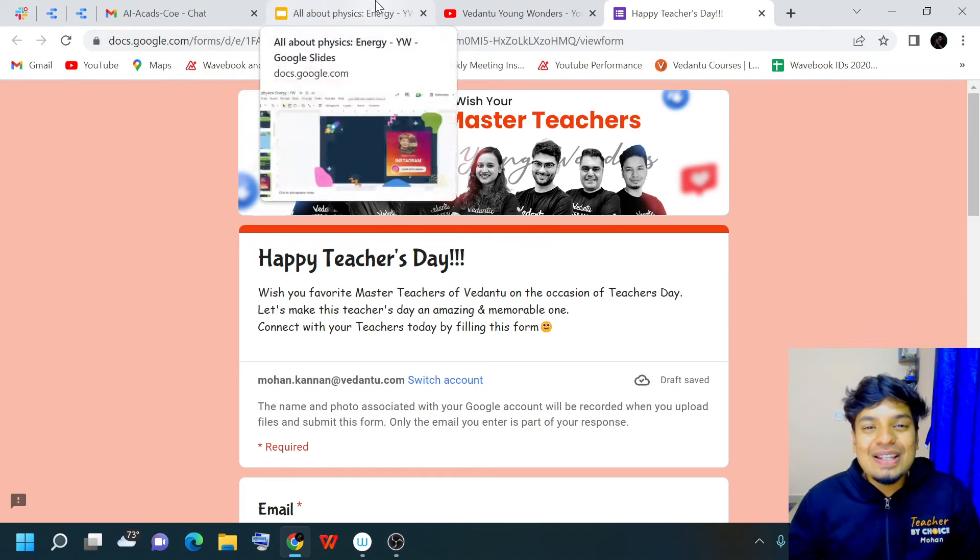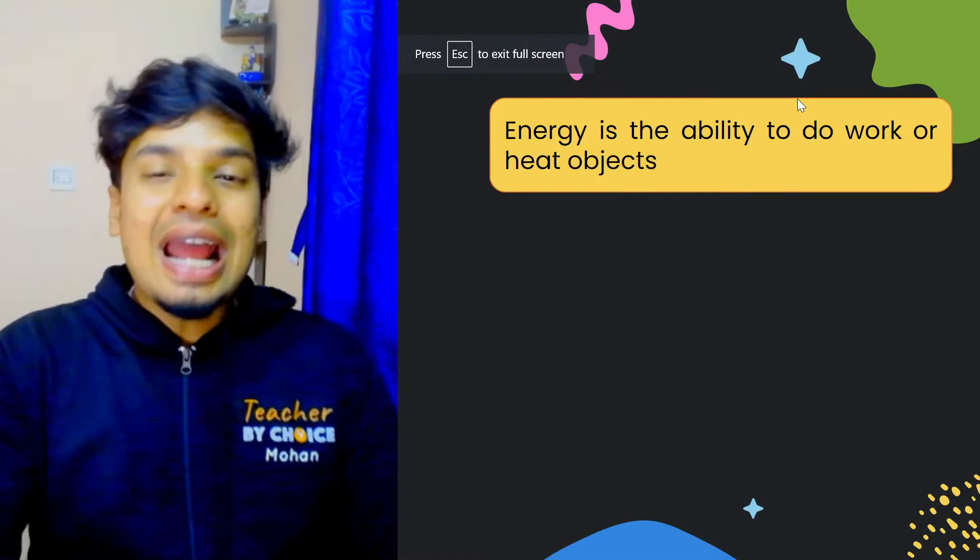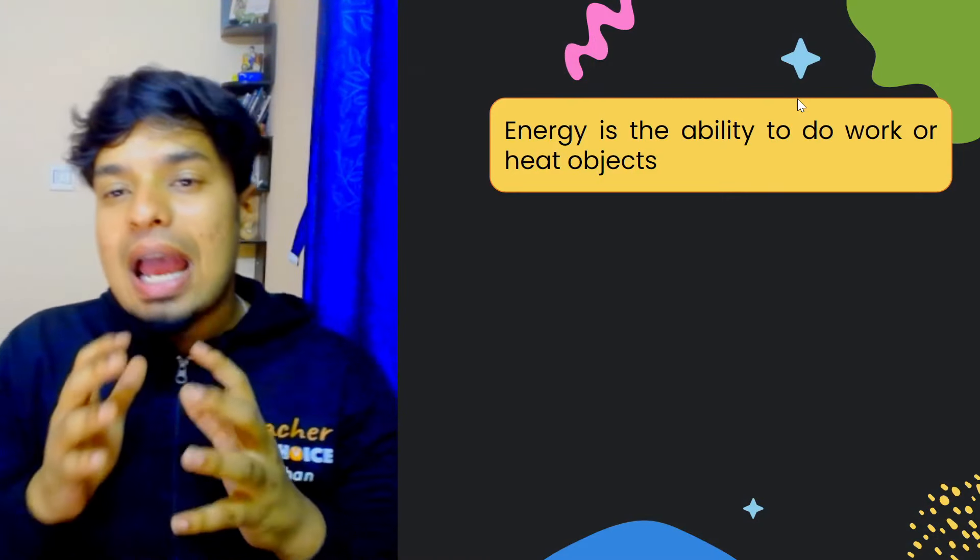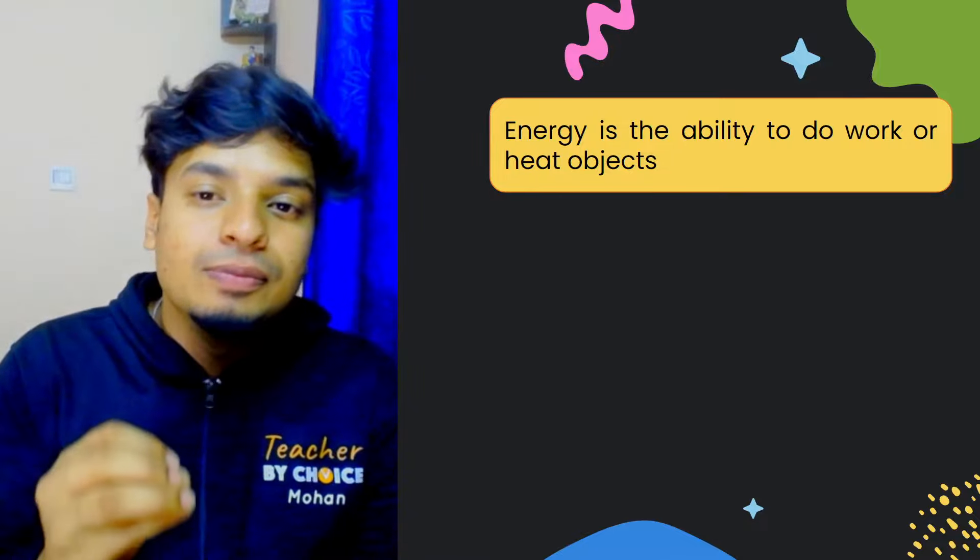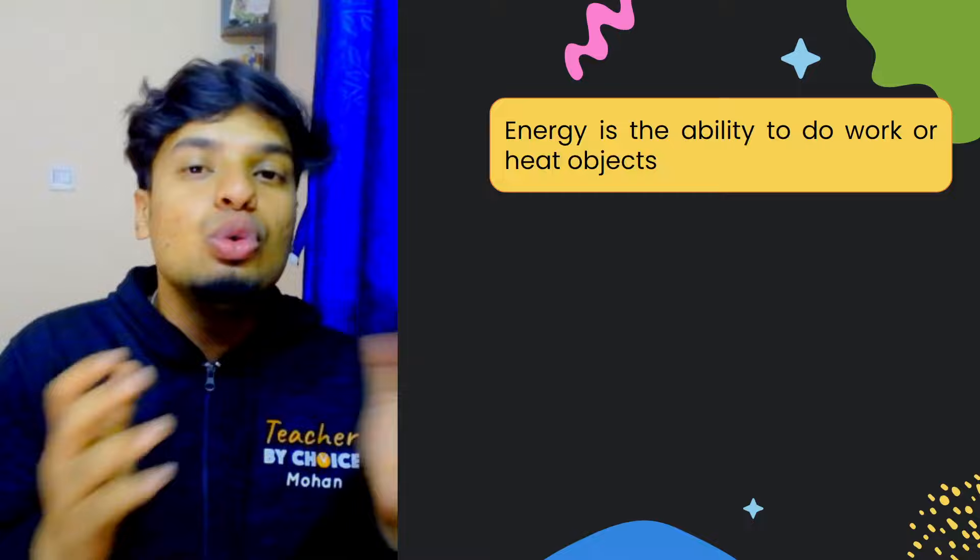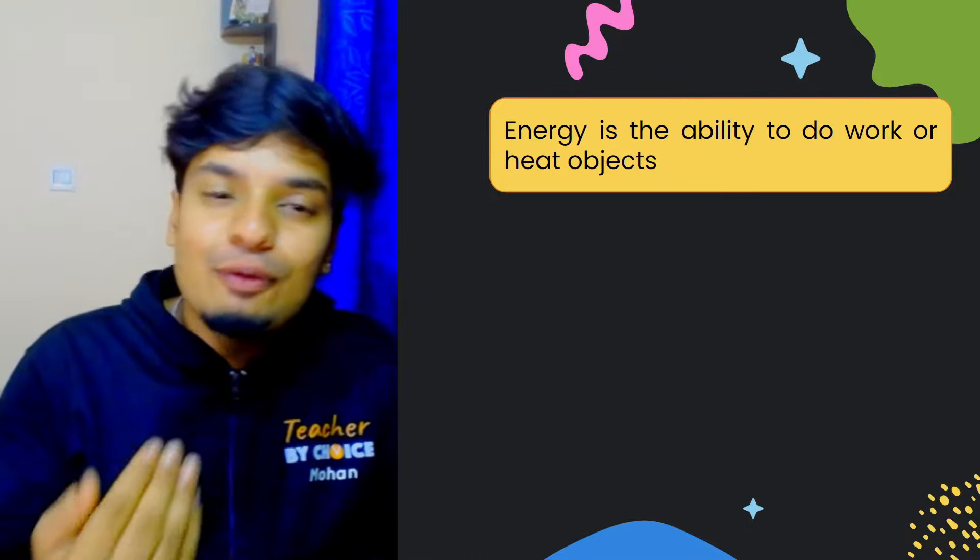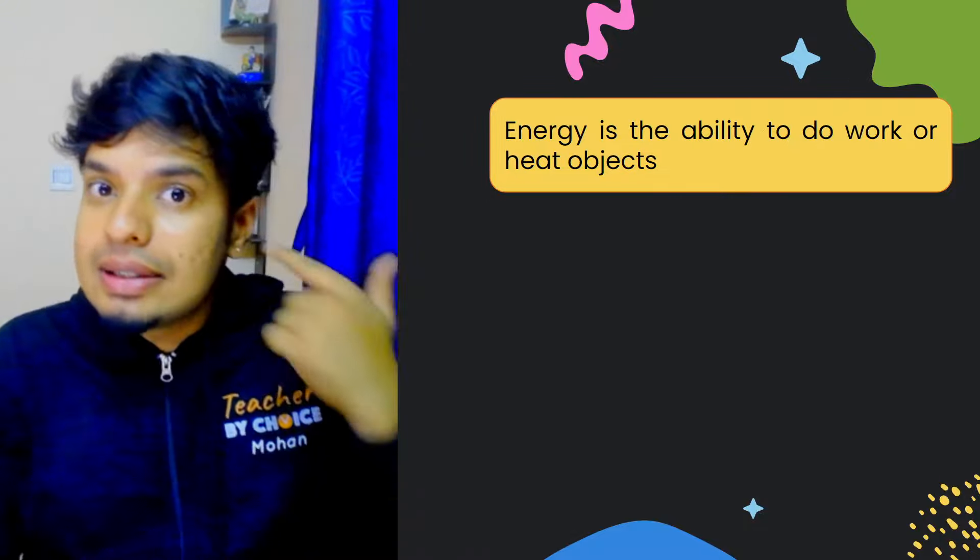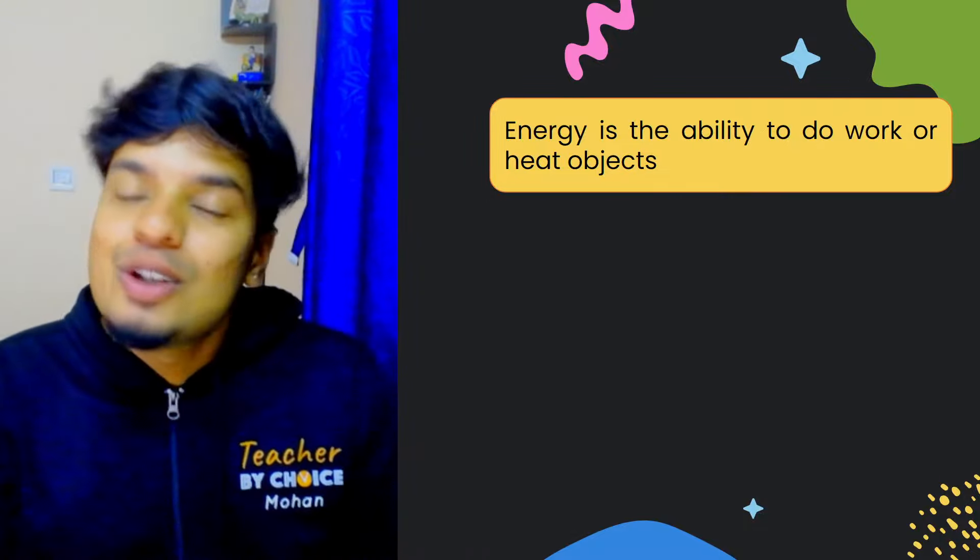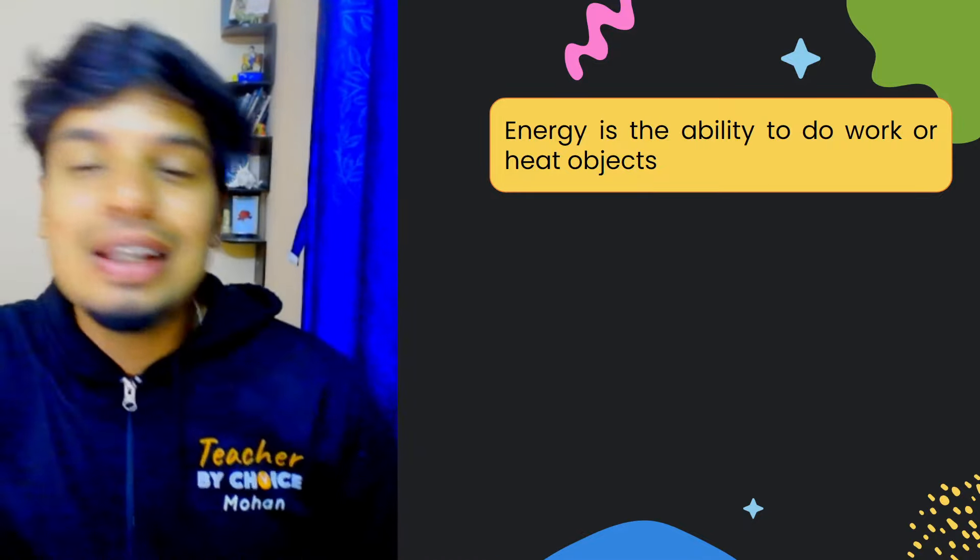Now let's talk about energy right away. Energy is the ability to do work or to heat objects. Whenever we need to do something, for example, if I have to take this session right now, I need energy. When you want to sit and listen to me, you need energy. So energy is basically the ability to do work or to heat objects.